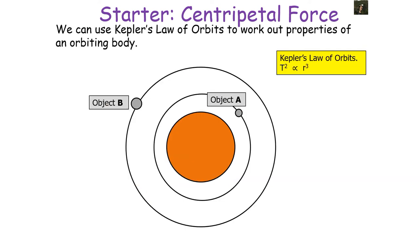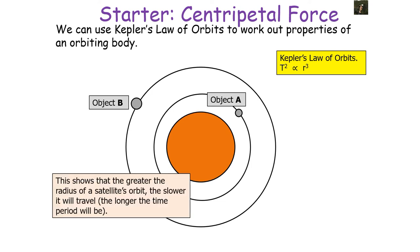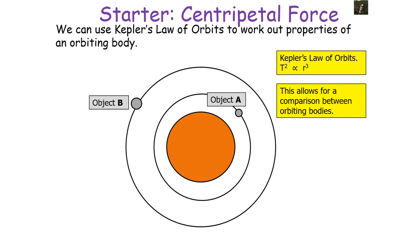Kepler's law (T² ∝ r³) allows us to work out properties of an orbiting body. The greater the radius of a satellite's orbit, the longer its time period and the slower it will travel. It also allows comparison between orbiting bodies: since T²/r³ is constant, if we have two objects A and B, then T²_A / r³_A = T²_B / r³_B, and if three of the four terms are known the fourth can be calculated.